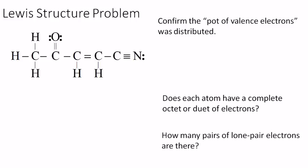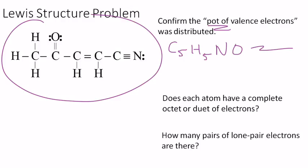You need to come up with the pot of valence electrons using the formula. What is that formula? It looks like C5, H5, N1. What is the pot of valence electrons and does it match the structure? And then, don't worry about this one, but go ahead and answer this one. How many lone pairs of electrons are there?